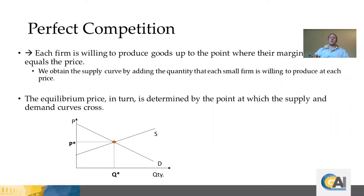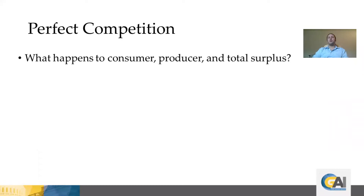To understand the properties of the perfectly competitive market equilibrium, we can use the measures of consumer surplus, producer surplus, and total surplus, and see how these look in a perfectly competitive market and how they change when we move away from it.